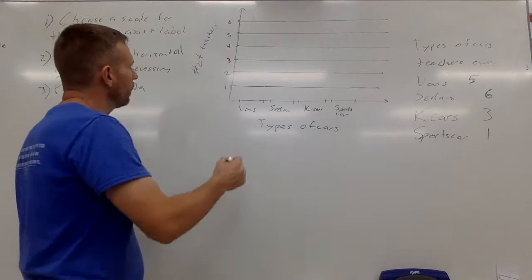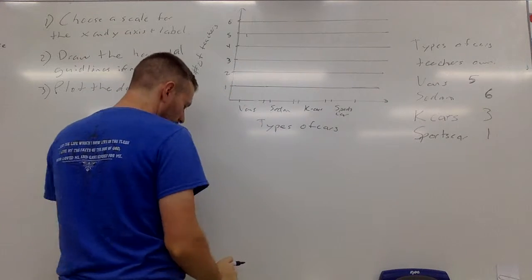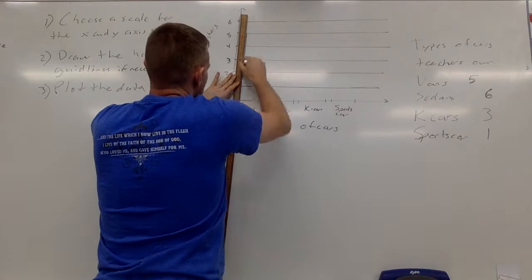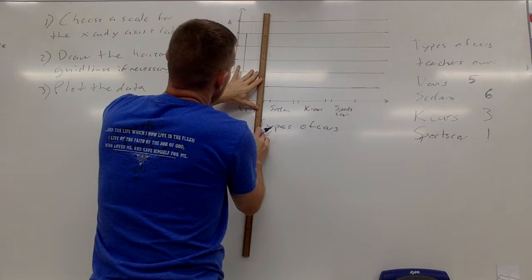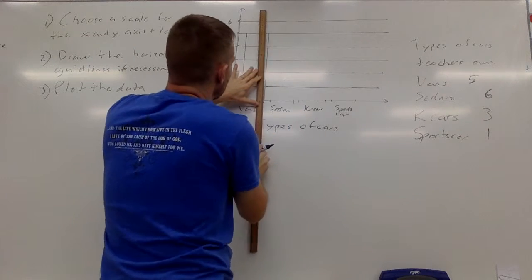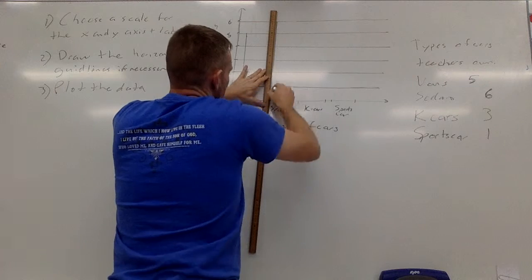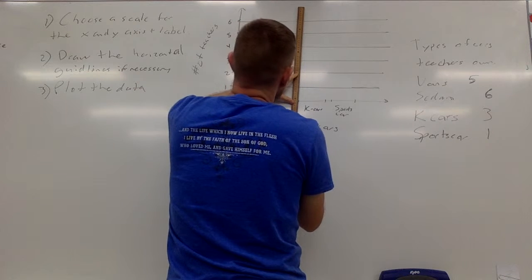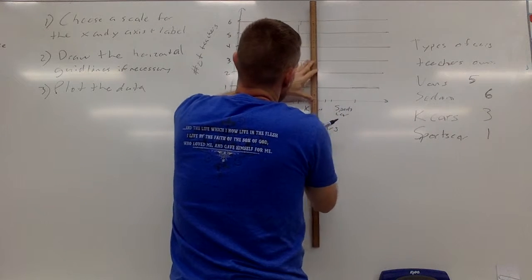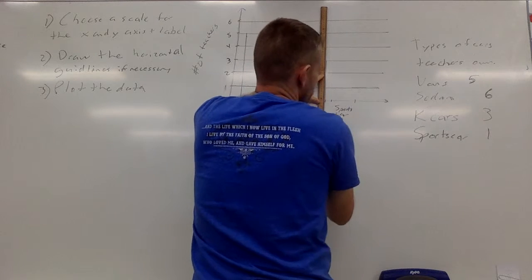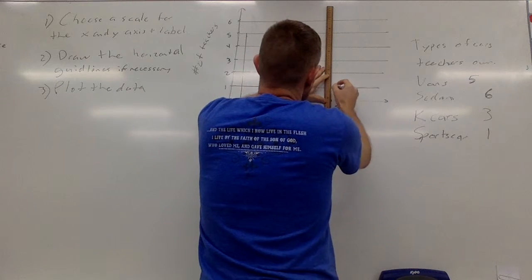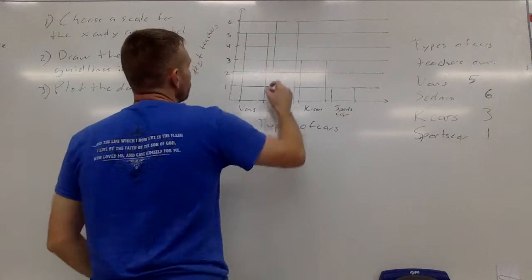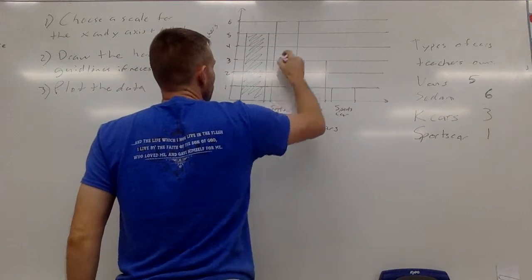You can already see by my example why these horizontal grid lines or guidelines are helpful. The vans, there's five, so I'm going to go all the way up to here using my ruler. Sedan there's six, K cars there's three, sports car one. You can see it even easier now.